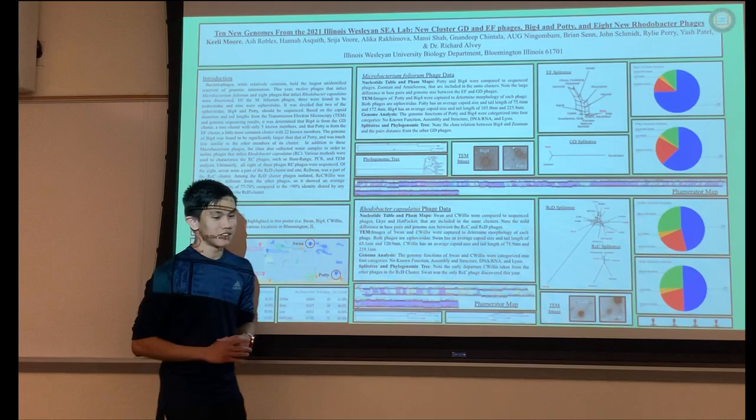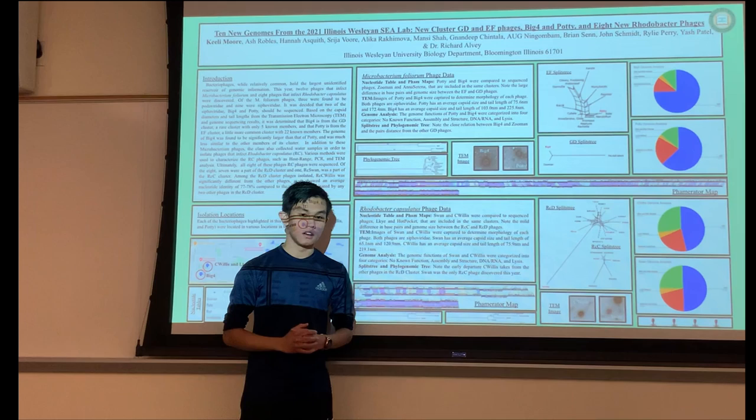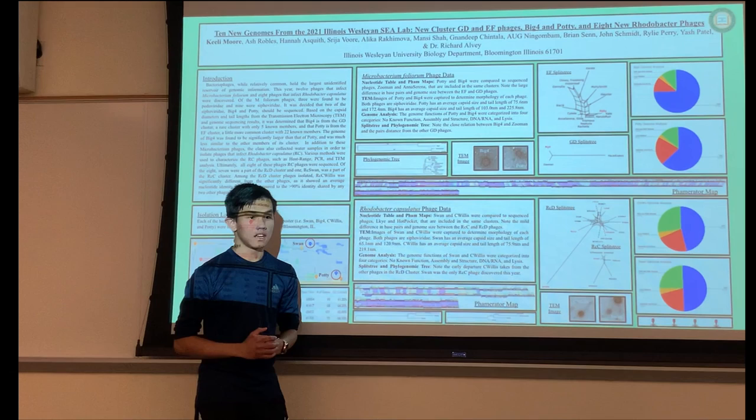Genome analysis: The genome functions of Swan and Caerulius were categorized into four parts: unknown functions, assembly and structure, DNA and RNA, and lysis.